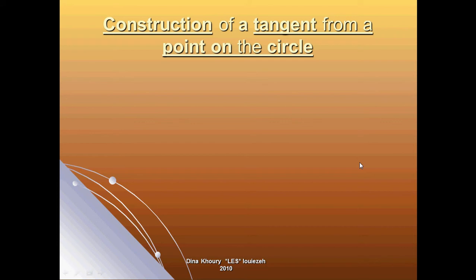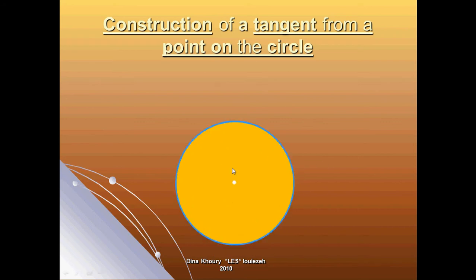Construction of a tangent from a point on the circle. Consider a circle C with center O and point A on the circumference of the circle. We want to draw a line tangent to this circle at point A, so we connect and draw the segment OA — the segment OA is the radius of this circle.